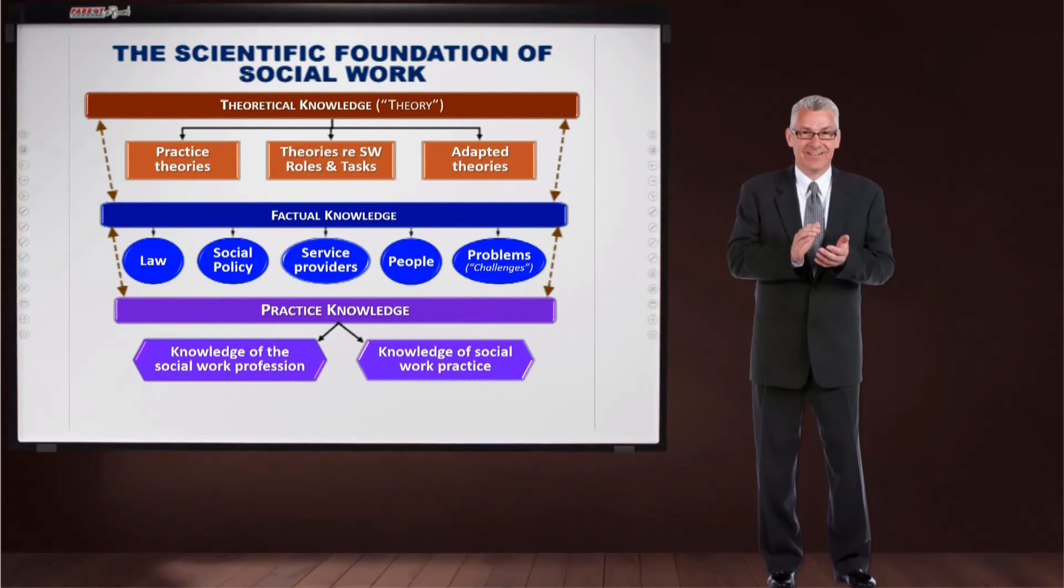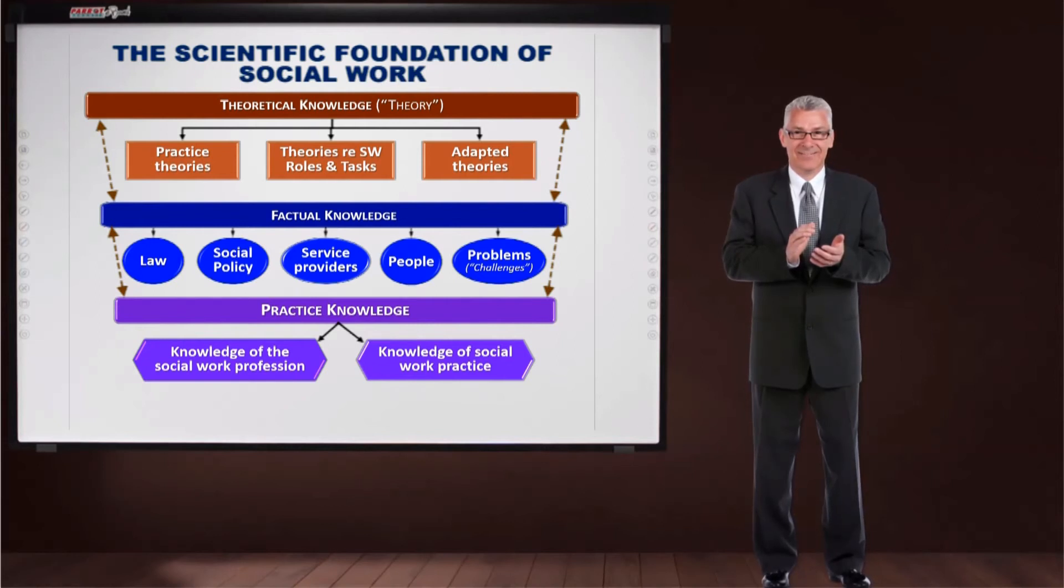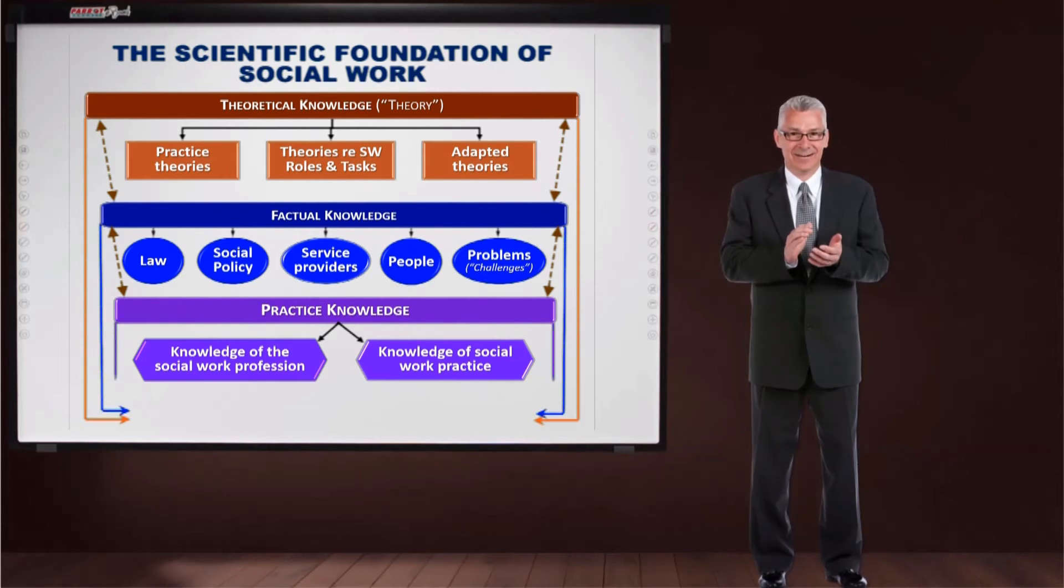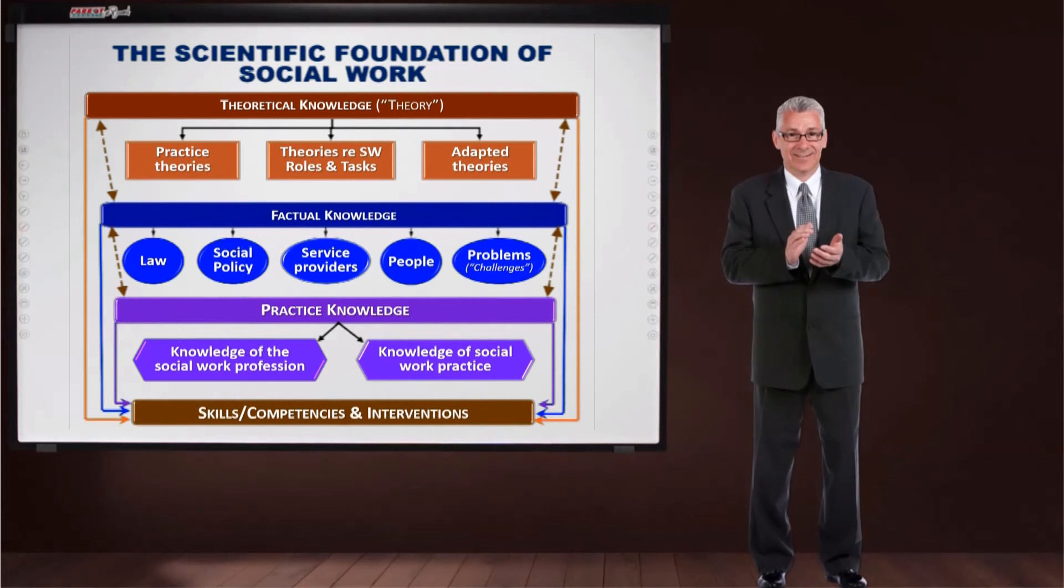Social workers must not only know the narrow ambits of their own practice setting, but also the broad field of social work practice. These include specializations such as clinical, forensic, school, and occupational social work, to mention only a few. All in all, even though you might practice in one setting, you must know all the others in order to ensure that an appropriate and holistic service is rendered to client systems.